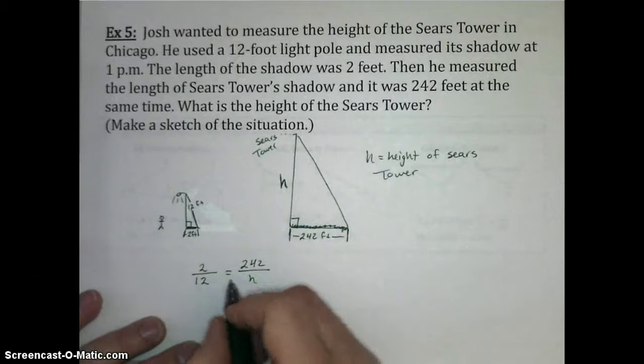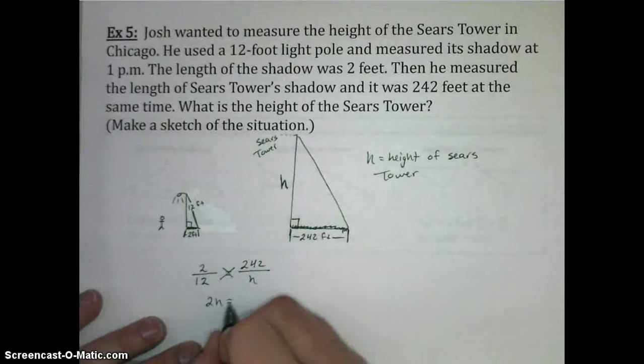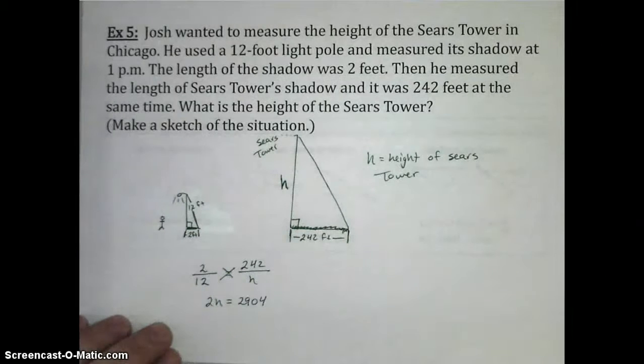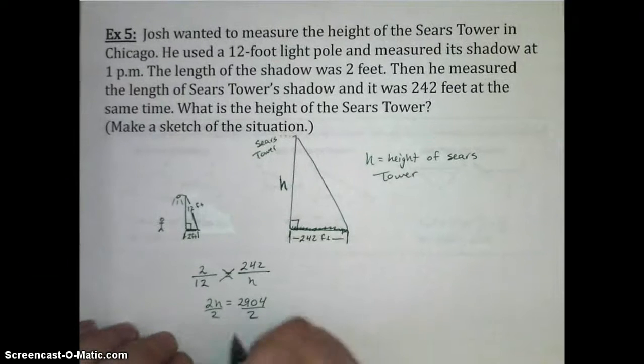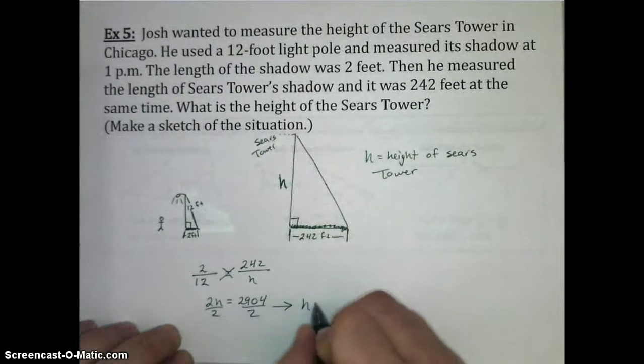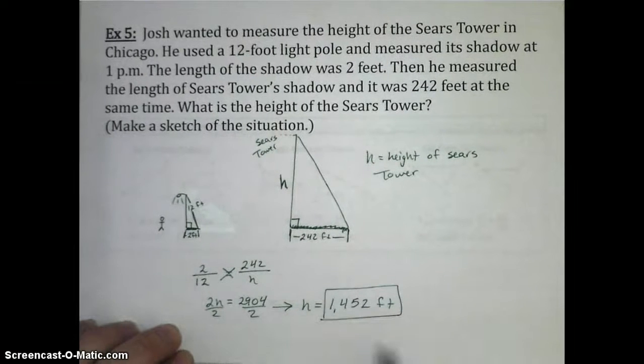All right, and so what we're going to do is use that similarity to set up a proportion of 2 feet to 12 feet for the shadow length to the actual height of the pole, and that should be equal to our shadow length, 242 for the Sears Tower, to the height of the Sears Tower. And once again, all we have to do here is cross-multiply. So 2h equals 2,904, and divide by 2, and the height of the Sears Tower in feet is 1,452 feet using similar triangles created by an object and its shadow.